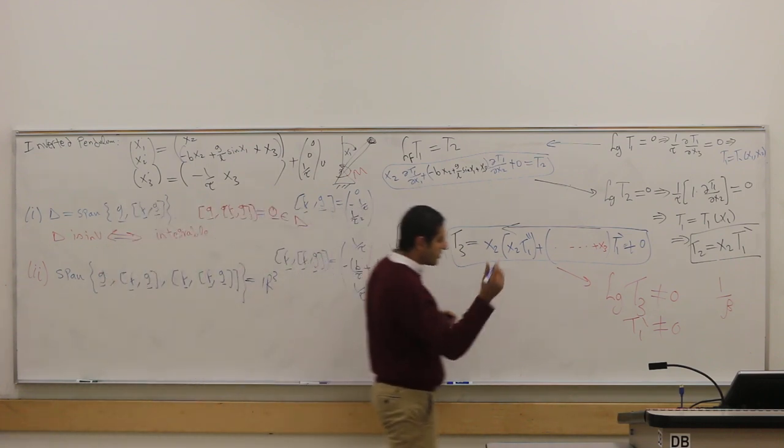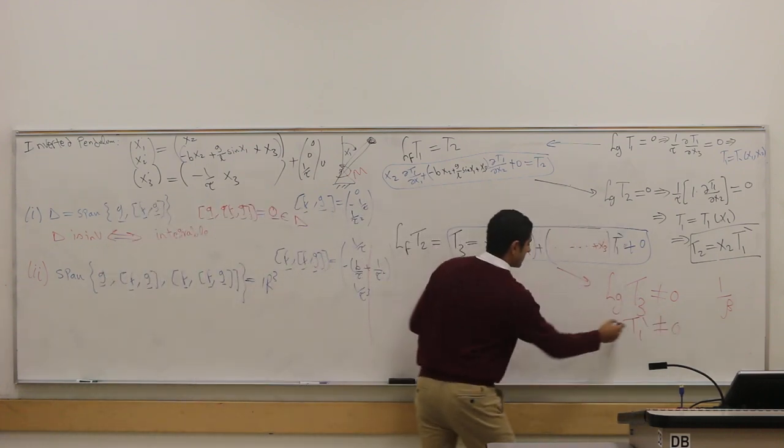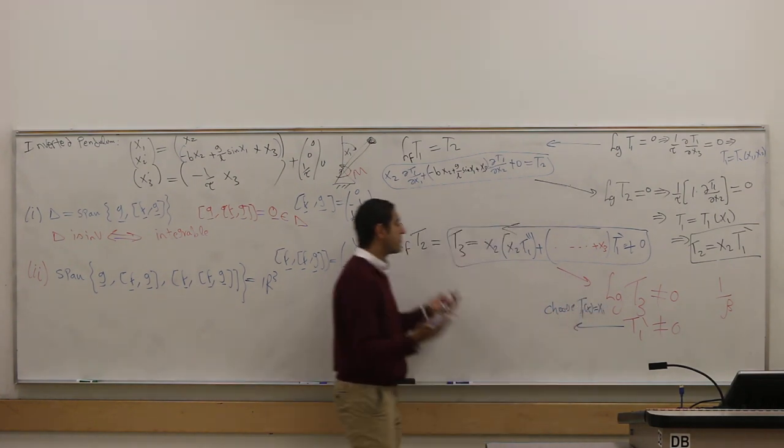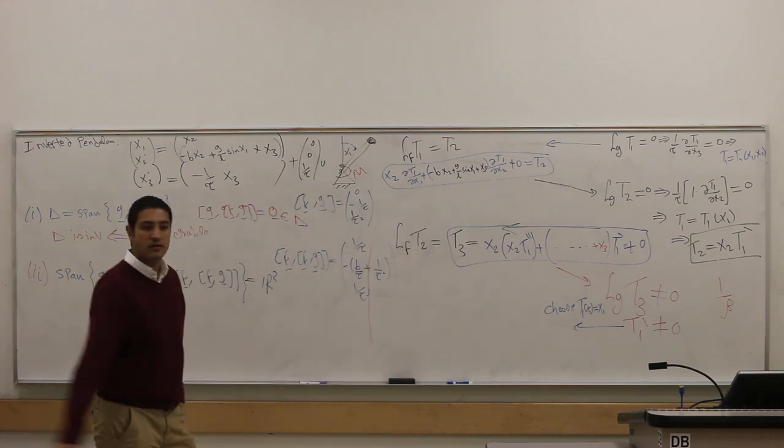So in particular, I can choose the easiest thing: t1 of x1 is just x1, so t1 prime is just 1.